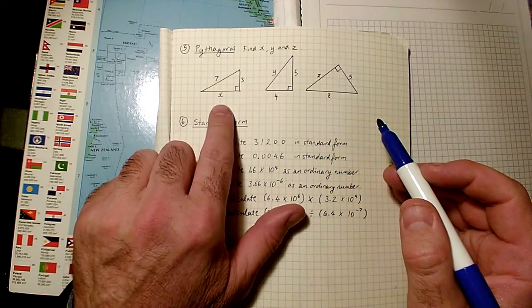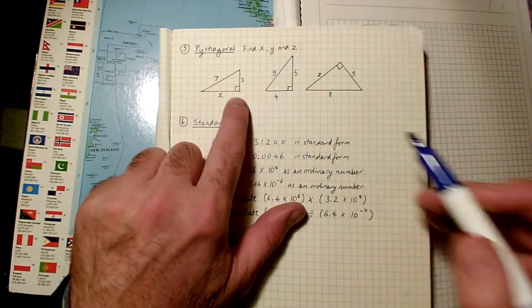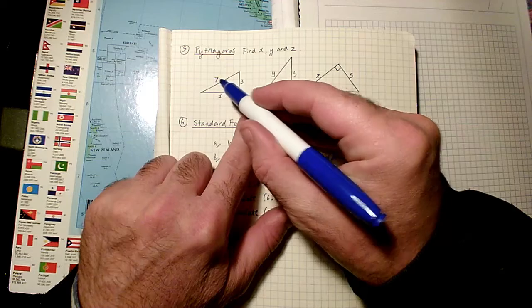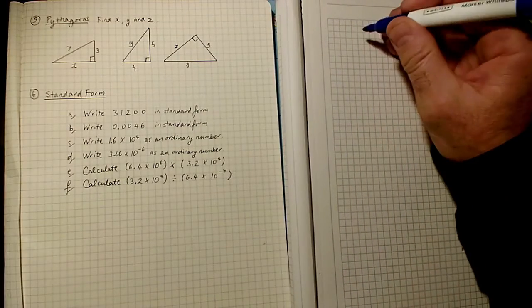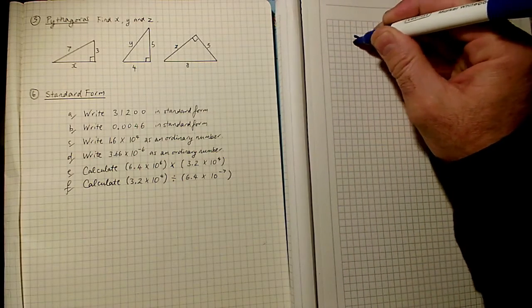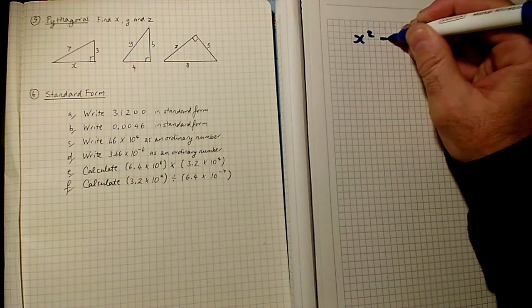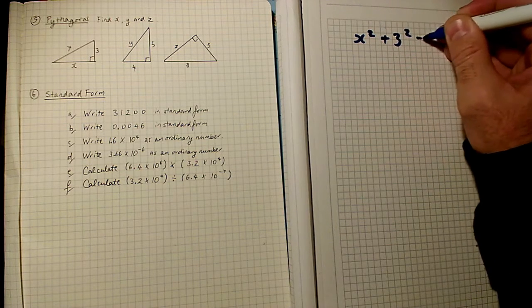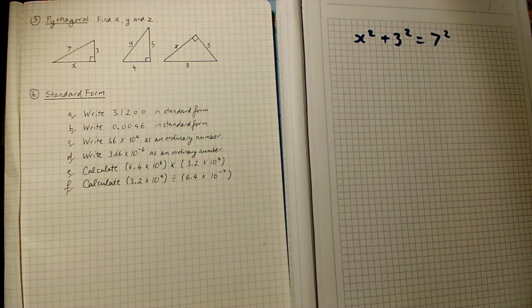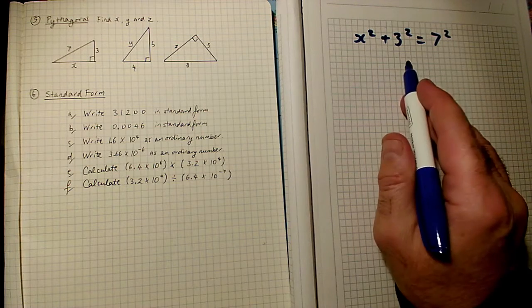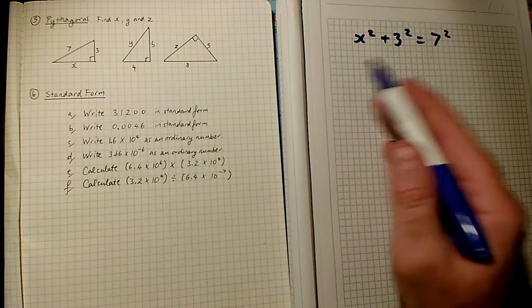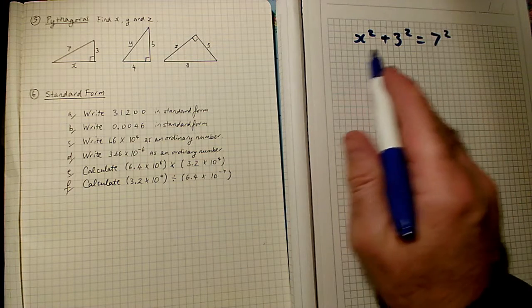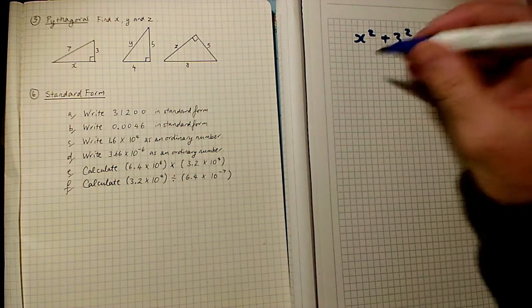In the first one, the largest side here is the 7. We know it's the largest because it's opposite the 90 degree angle. So we can write, according to Pythagoras, that x squared plus 3 squared equals 7 squared. The two smallest squares add up to the biggest squared. I've written it with the 2 on the left and the 1 on the right so that we get the x on the left and it'll be neater.